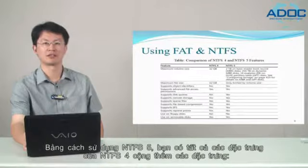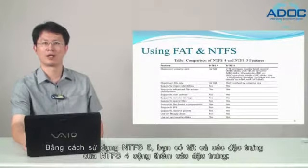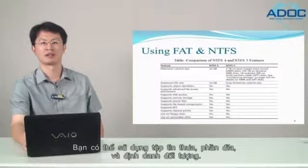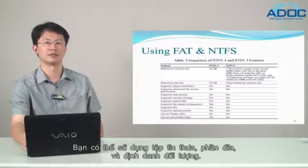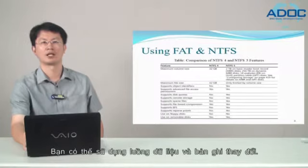By using NTFS 5, you have all the features of NTFS 4 plus additional features. You can use sparse files, disk quotas, and object identifiers. You can also use reparse points, remote storage, and shadow copies, as well as data streams and change journals.